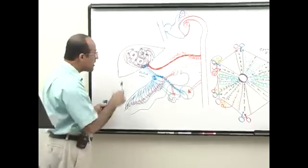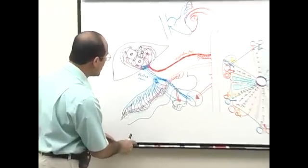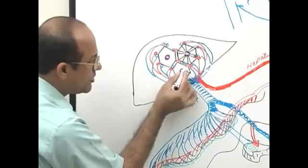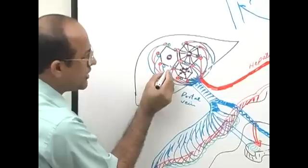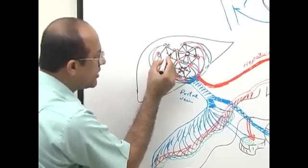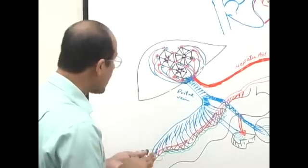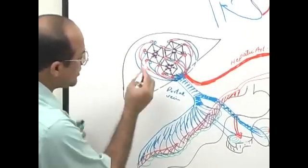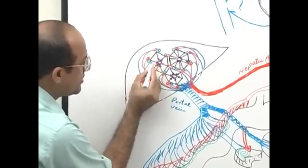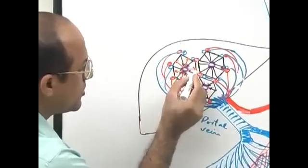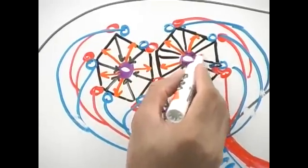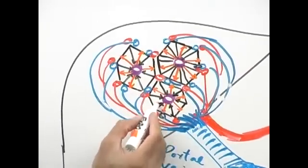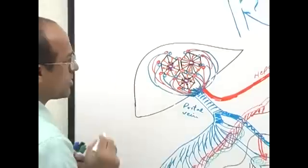Looking at the diagram, blood is moving from the periphery to the center in the hepatic classical lobules. At the same time, bile is moving from the center to the periphery, and in the same direction, lymph is also moving from center to periphery.